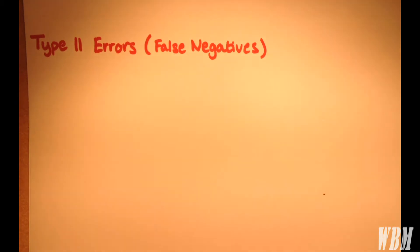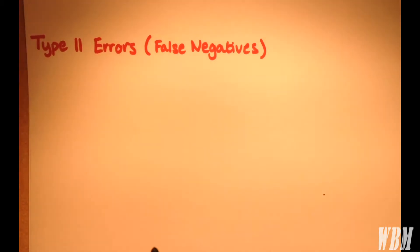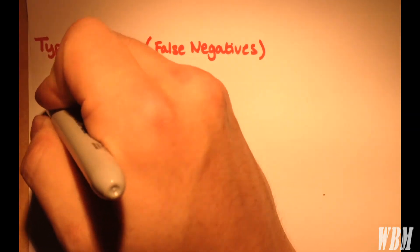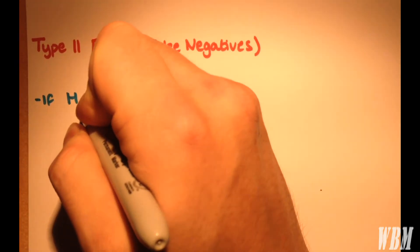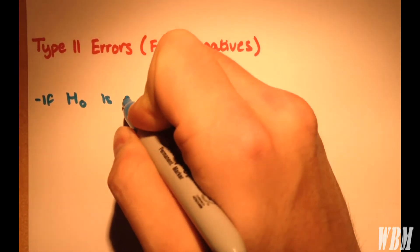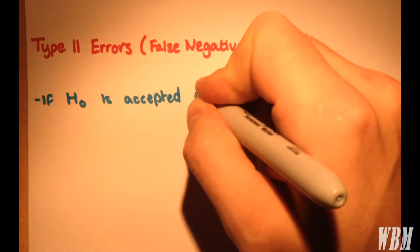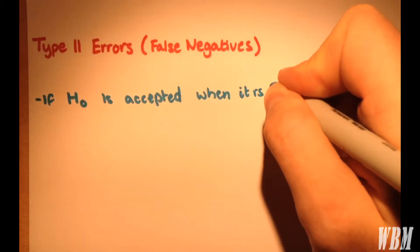Type 2 errors we refer to as false negatives. So what a Type 2 error is, is if the null hypothesis is accepted when it's actually false.